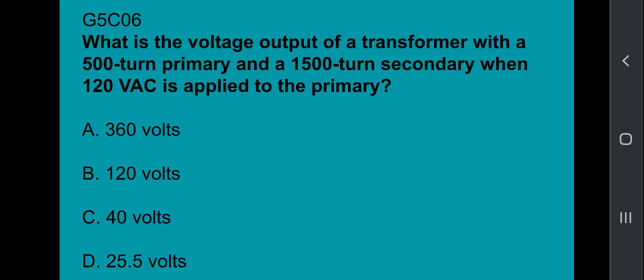G5C06: What is the voltage output of a transformer with a 500 turn primary and a 1500 turn secondary when 120 volt AC is applied to the primary? That's going to be 360 volts.